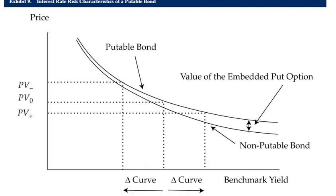Looking at the interest rate characteristics of a putable bond: the putable bond gives the bondholder the right but not the obligation to put the bond back to the issuer. There is still convexity in the curve — no negative convexity. The value of the embedded put option puts the curve of the putable bond above the curve of the non-putable bond.